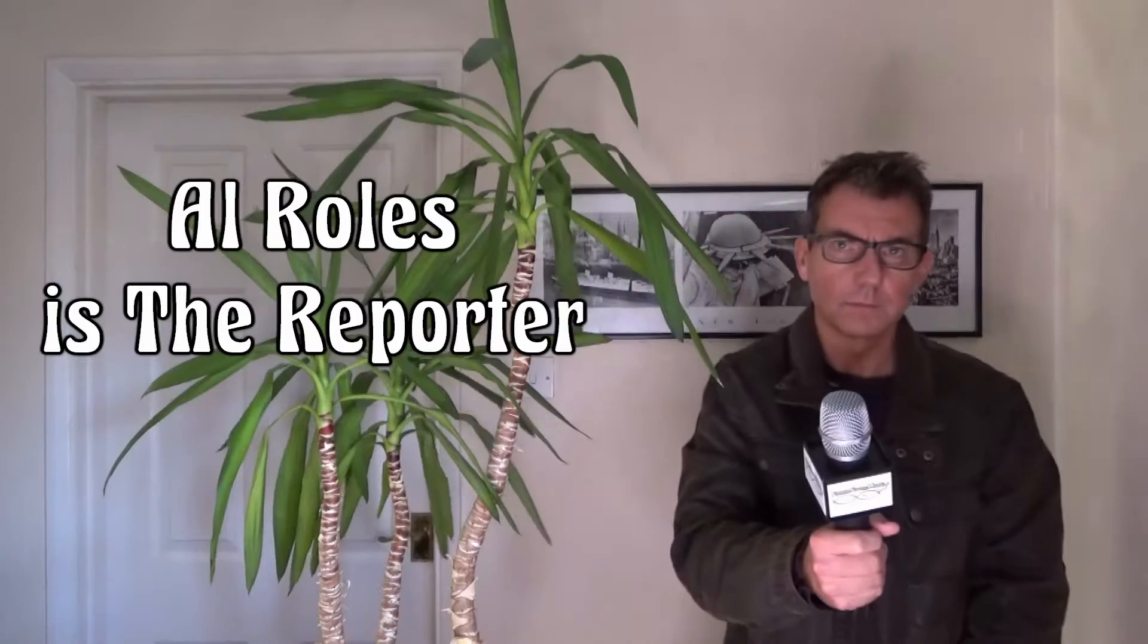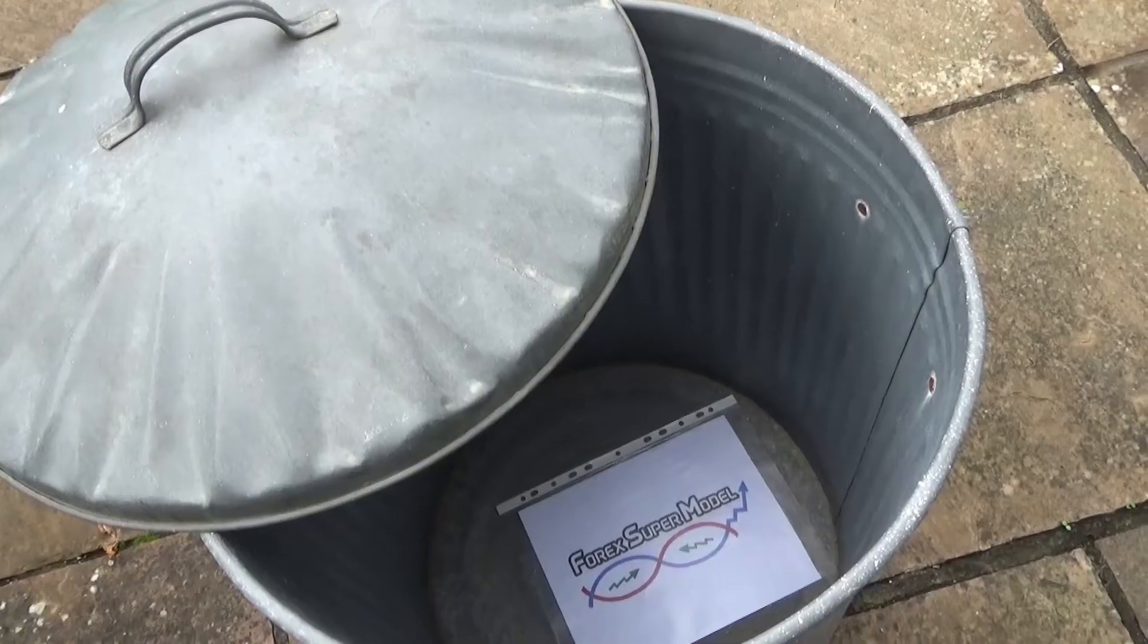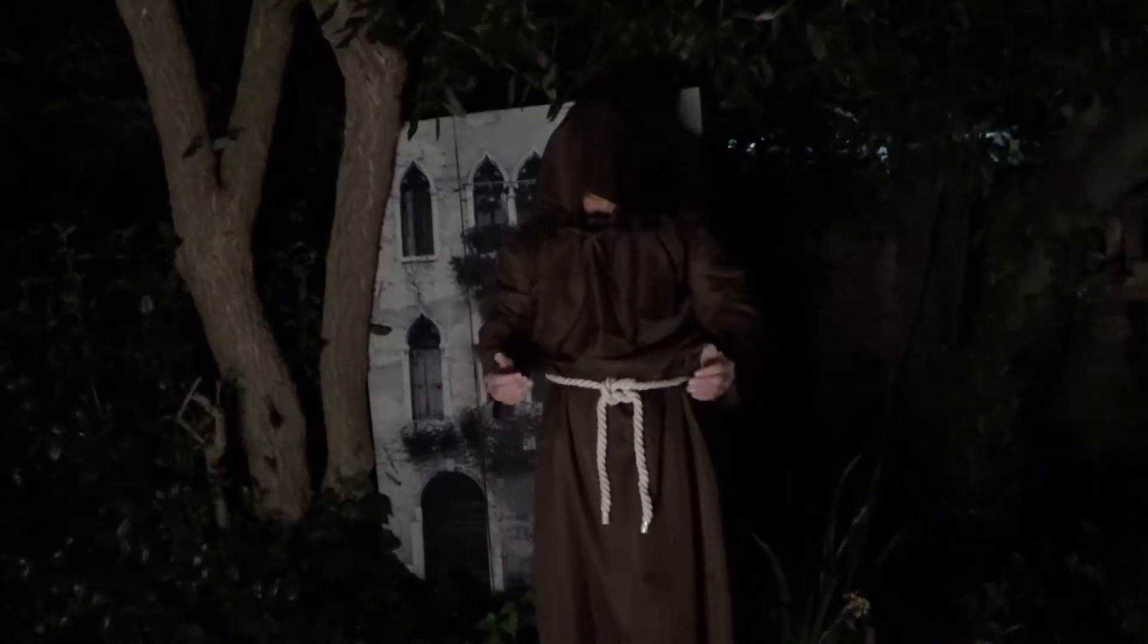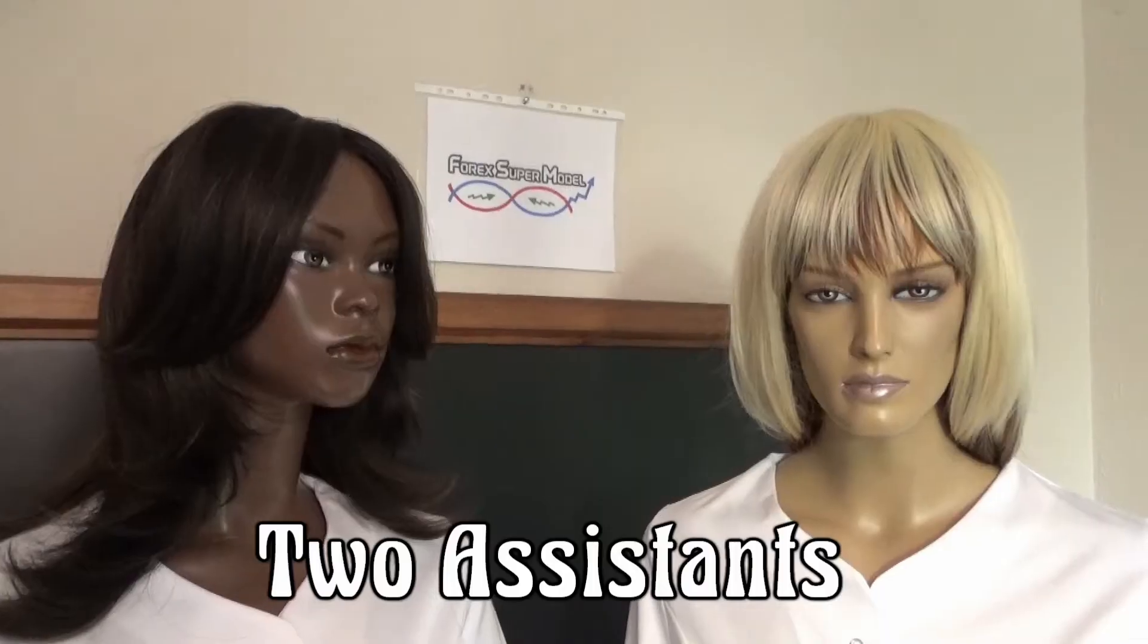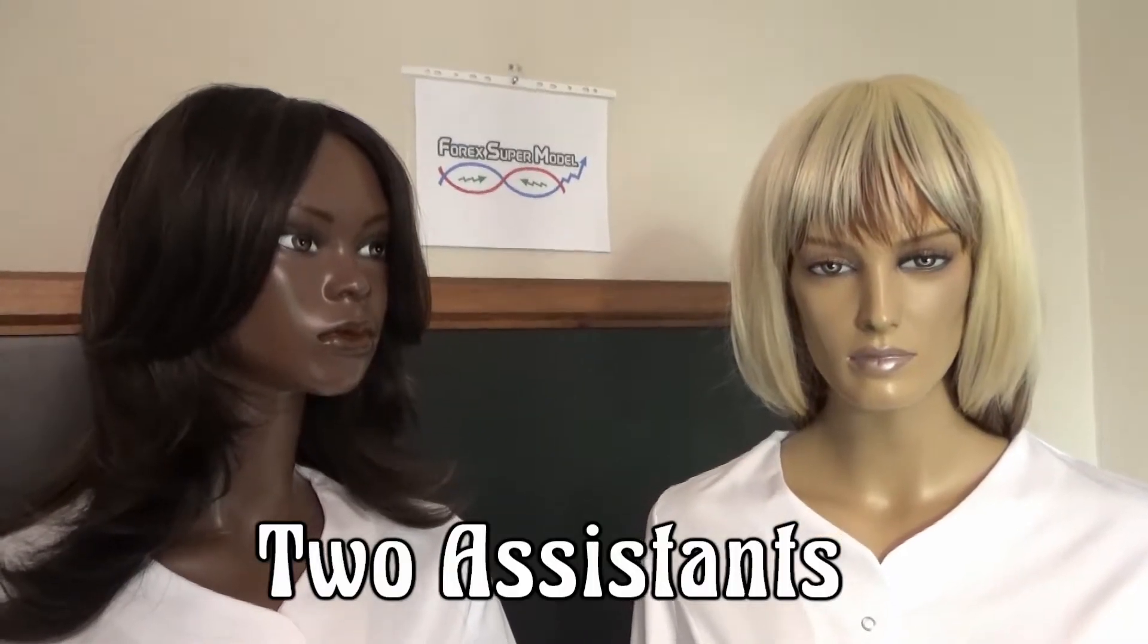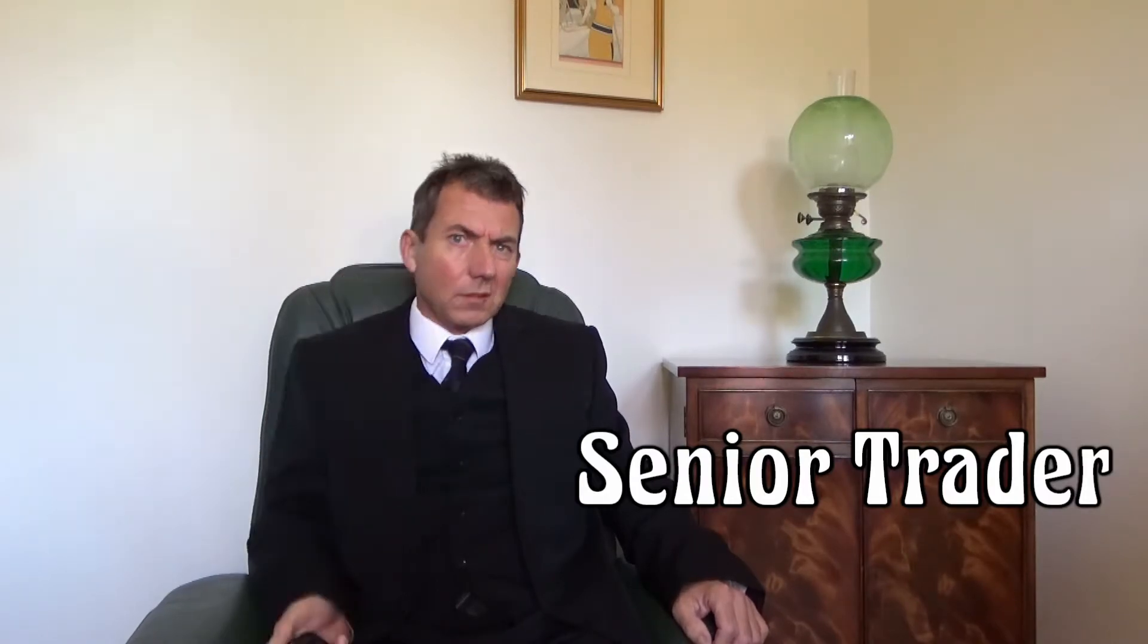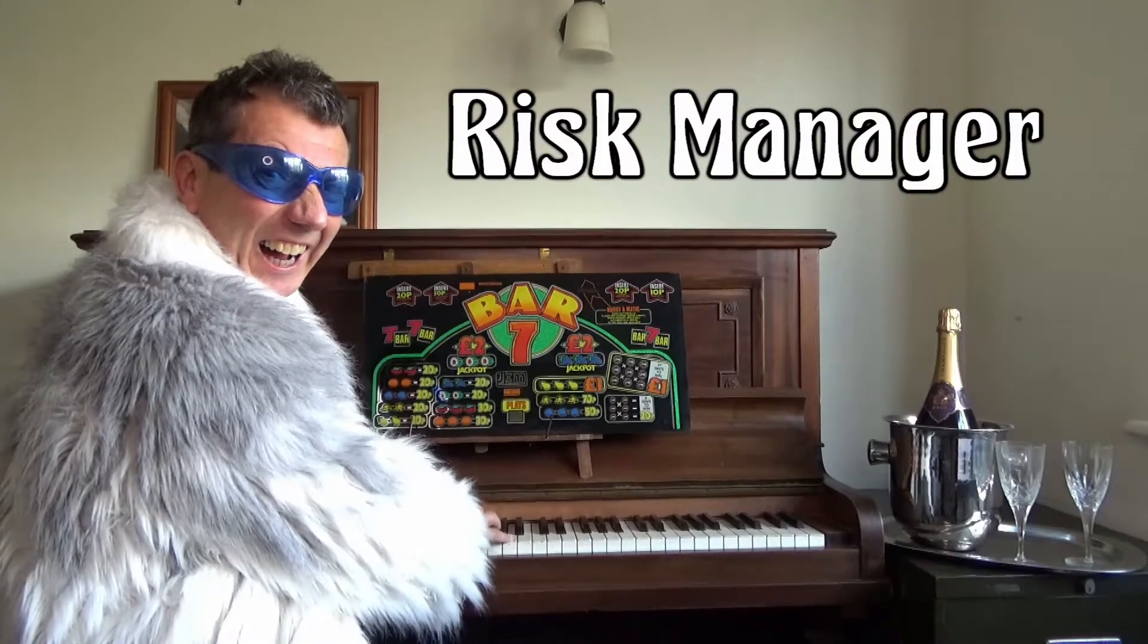Al Rold is the reporter thrown into the secretive world of the 4M supermodel, where nothing is as it seems. Beware the techno-monk and steer clear of Professor Code and his two assistants. Give the senior trader a wide berth and don't expect any sense from the risk manager.